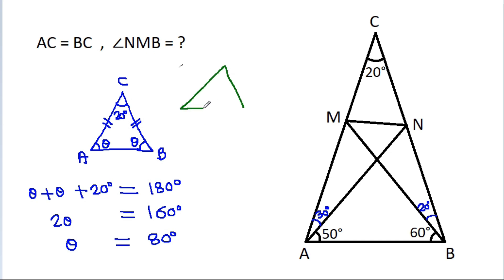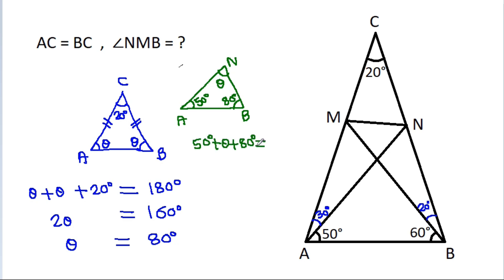In triangle ABN, this angle is 50 degrees and this angle is 80 degrees. Suppose the remaining angle is theta; then theta plus theta plus 80 degrees equals 180 degrees, so theta equals 50 degrees. This angle will be 50 degrees.